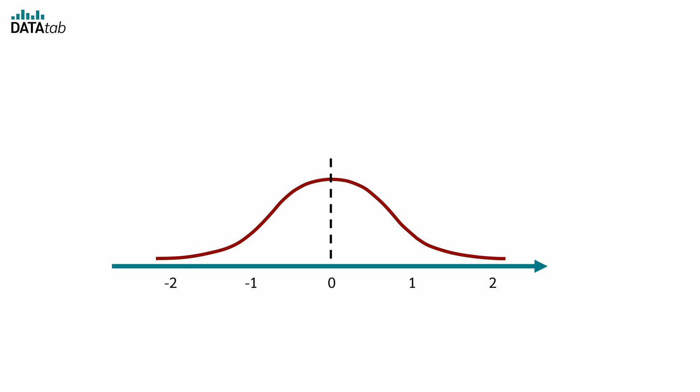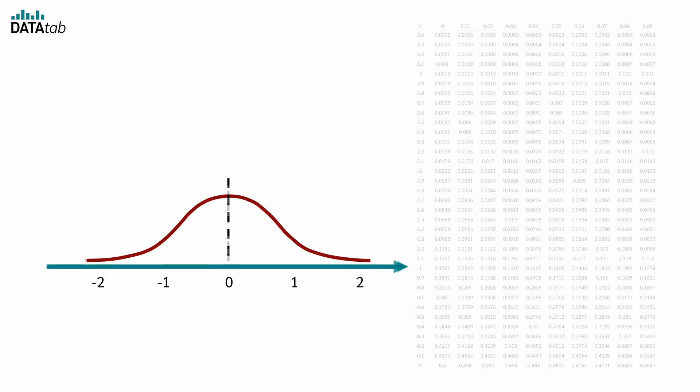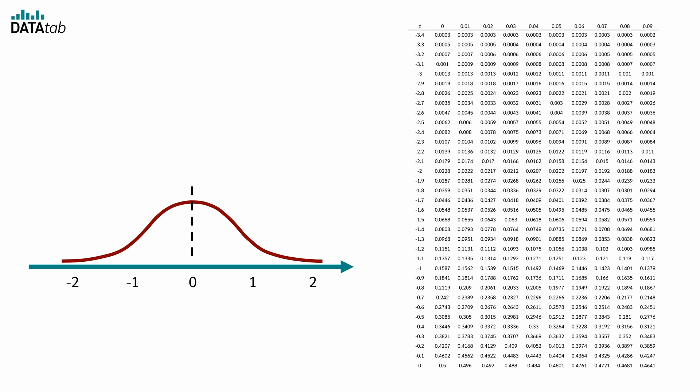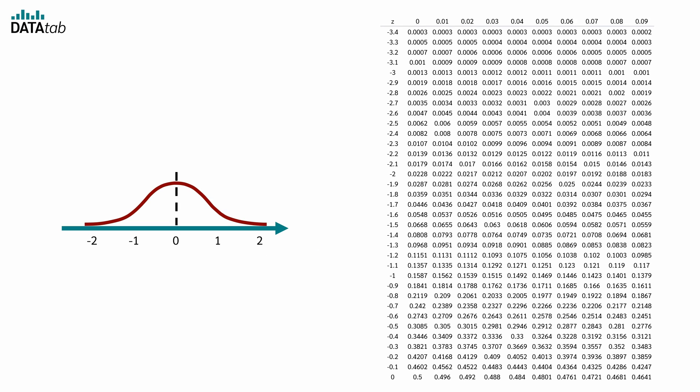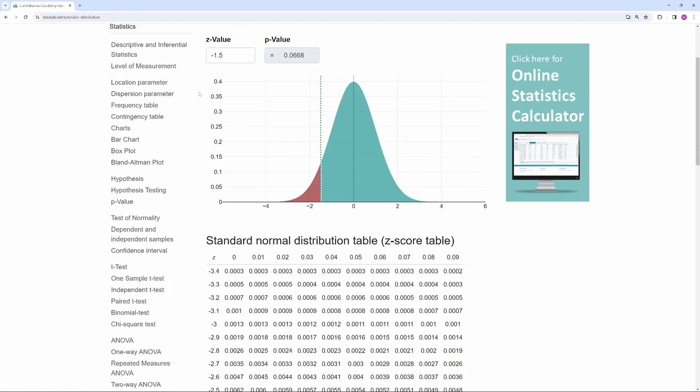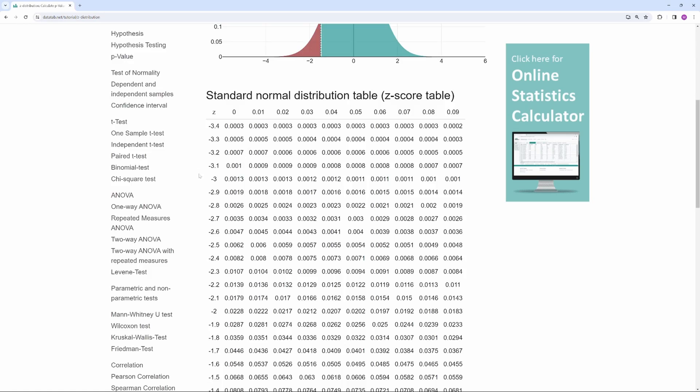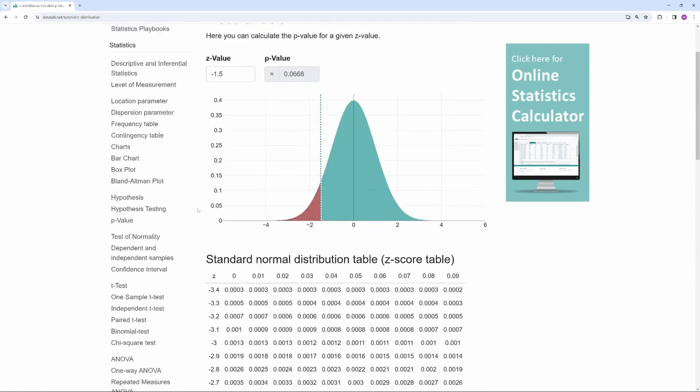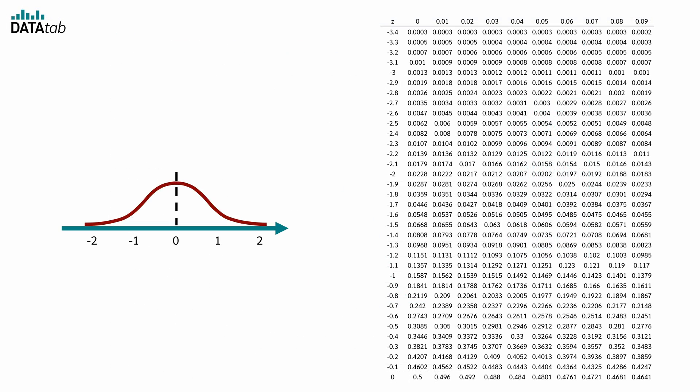Given the standardized distribution, we just need a table that lists the percentage of z-values falling below various z-scores. This table enables us to quickly determine the proportion of observations that lie beneath any specified z-score across the distribution. And you can find such a table in almost every statistics book or on datatab.net. The link is in the video description. Now the question is how to read this table.